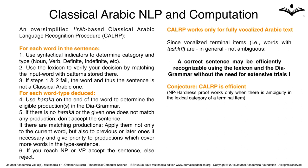We can safely conjecture that CALRP is efficient. The NP-hardness proof works only when there is ambiguity in the lexical category of a terminal item. But this is not enough to show that P equals NP, because we would have to show that the grammar expressing classical Arabic is as powerful as the LFG, which is a difficult task.